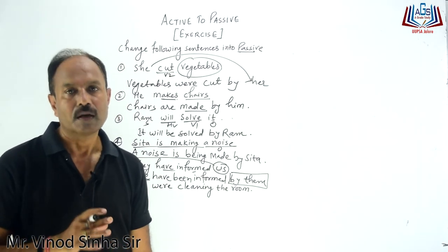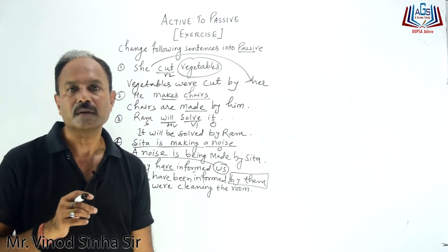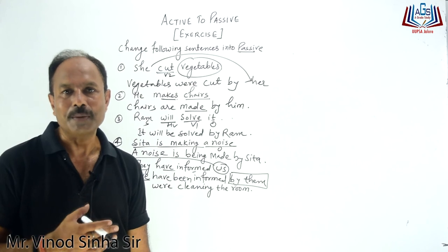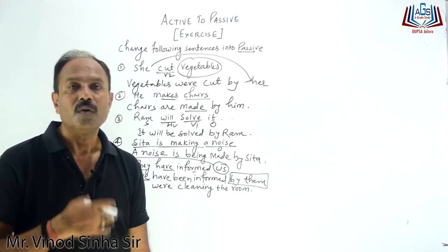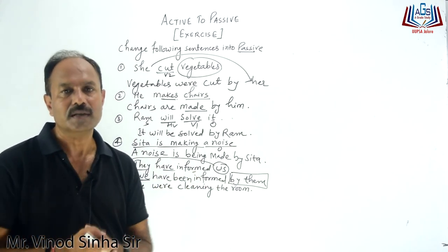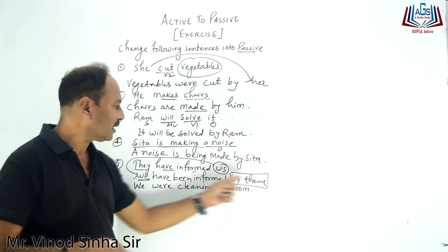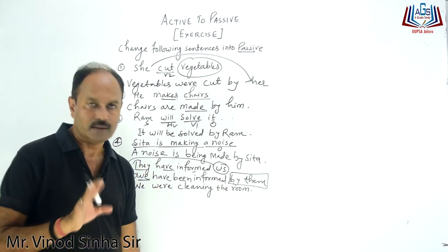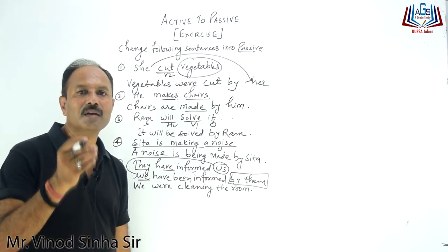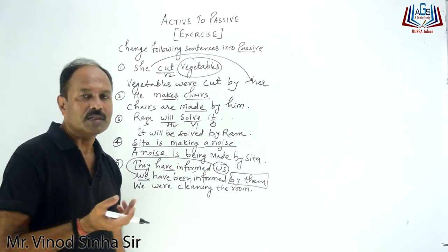It is not to be written. Grammar suggests that these are unimportant subjects which become objects. Words like 'people', 'they', 'we' — we do not take them into the object, because they are addressing a very broad or general mass. Still, if you want to include it, then it goes here as 'by them'. This is being told because those who are preparing for competitive exams and reading from books sometimes see that there is nothing written there — so just keep that in mind.